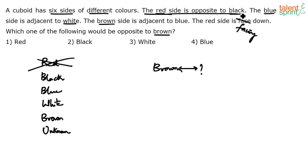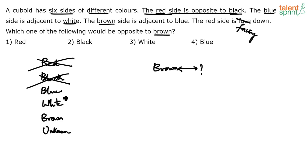If red is opposite to black, that means black is opposite to red. So can black be opposite to brown? No, because black is opposite to red. So black cannot be the answer. It's like what we do in ranking — don't try to find out who is the shortest, find out who is not the shortest. Now, the blue side is adjacent to white. The blue is adjacent to white — that doesn't really help eliminate anything.